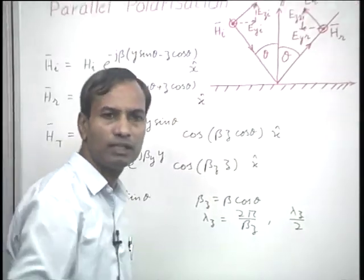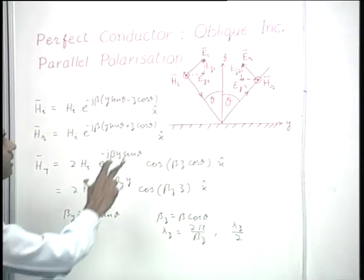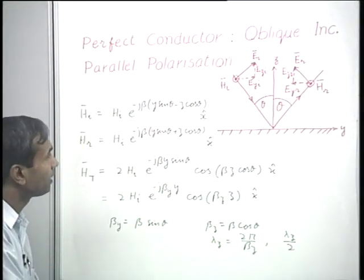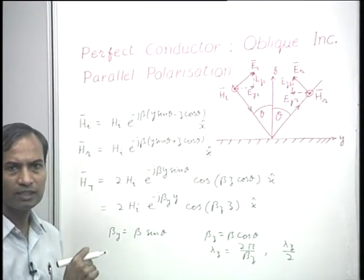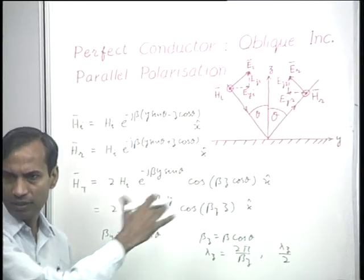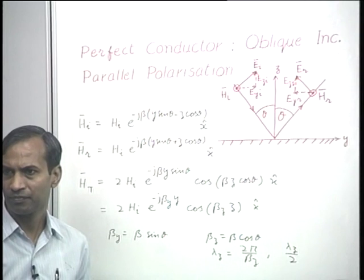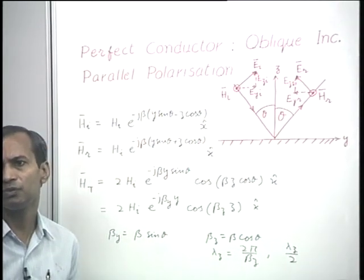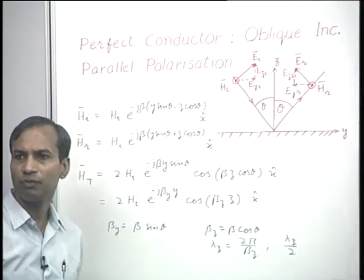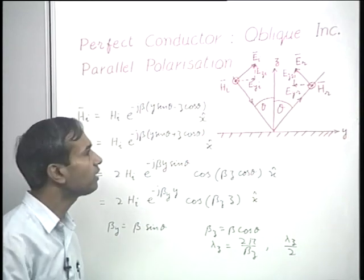Now we consider the behavior of the total electric field. We must consider the electric field in terms of its two components separately, because their behavior is slightly different. The E_z components are involved in propagation of power in the y-direction, which remains more or less unaffected by this interface. The E_y components are involved in propagation in the positive or negative z-direction. Furthermore, E_y components are tangential to the interface and are restricted to have a value of zero at the perfect conductor. So these two components behave slightly differently.